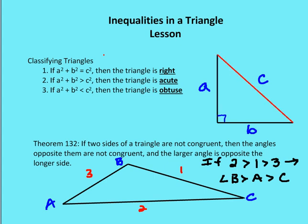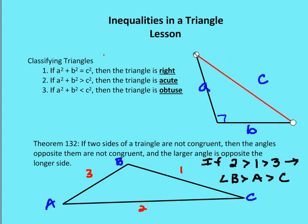Let's move all the pieces back. Now let's talk about what happens when I rotate segment a out, keeping the same length. Now I have to extend or lengthen c. Even though the lengths of a and b remain the same, c now becomes larger — I've just created an obtuse triangle. So if a squared plus b squared is less than c squared, then the triangle is obtuse.